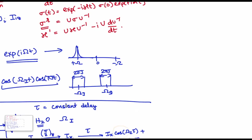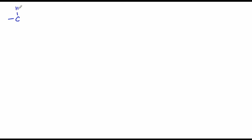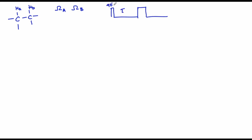Let us continue this example for a little more tricky case. Let us take a case where you have two protons that also have scalar coupling on top of this. In this case, let us say ωa and ωb are their chemical shifts, and we apply the same pulse program: 90y, 180x, τ, with τ being a constant delay applied in the same duration before and after the 180 degree pulse.